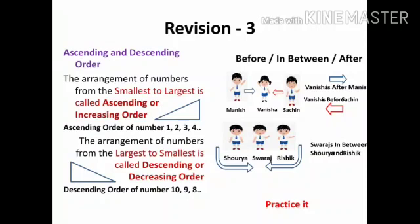We also learned the concept of before, in between, and after numbers or objects. Number 148 is just before 149, or we can say number 149 is just after 148, or number 148 is in between 147 and 149. In the picture, you can see Vanesha is after Manish, Vanesha is before Sachin, or Vanesha is in between Manish and Sachin.